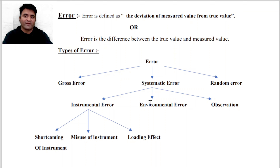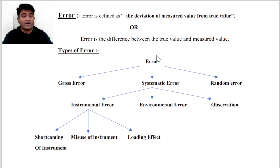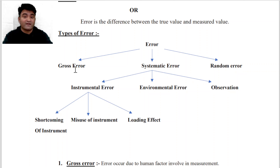Hi everyone, Basic of Measurement Series Lecture 5 में आपका स्वागत है। आज हम पढ़ेंगे Error and Its Types. सबसे पहले, Error is defined as the deviation of measured value from true value. Error is the difference between the true value and measured value.